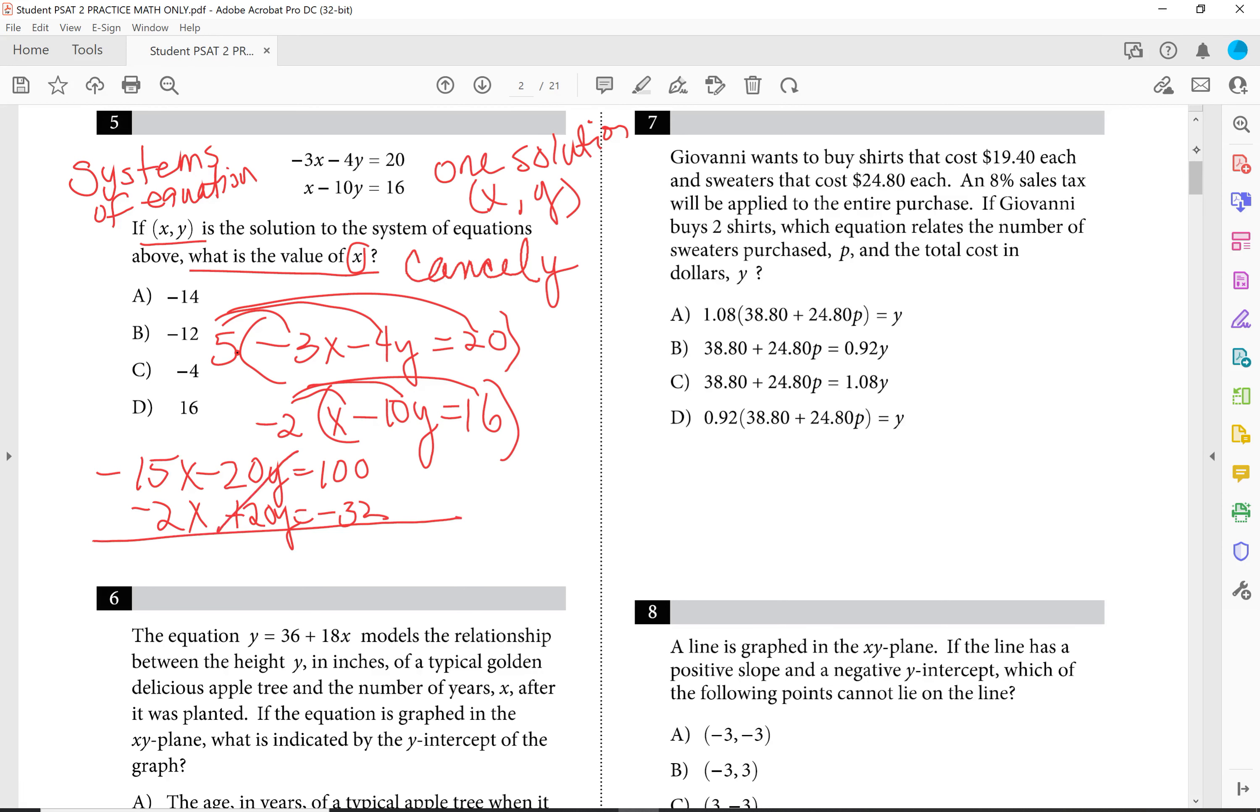So if you notice, now my y terms are gone. I'm left with negative 17x is equal to 68. I now want to divide by negative 17 on both sides of this equation. And I get x equals negative 4, which is your answer choice, c.